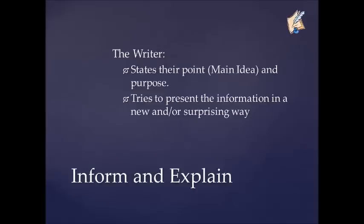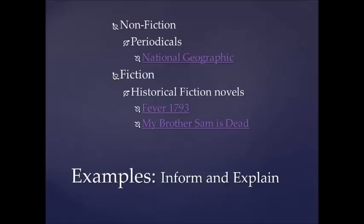Let's start with inform and explain. When an author wants to inform and explain, they will state their point, their main idea, and the purpose for their writing. They try to present information in a way that is new and/or surprising. Examples can be found in non-fiction, periodicals, newspapers, and magazines such as National Geographic, and historical fiction novels like Fever 1793 or My Brother Sam is Dead.